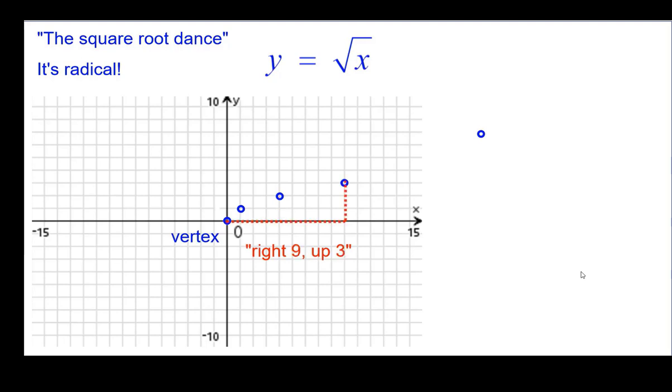From the vertex, right 9 and up the square root of 9, which is 3. And then right 16 and up 4. Those will be our five key points. Sometimes we only be able to get 4, but those are five key points there.